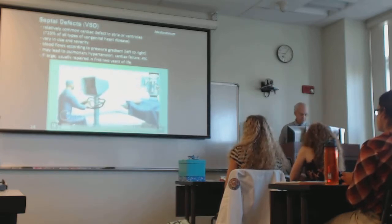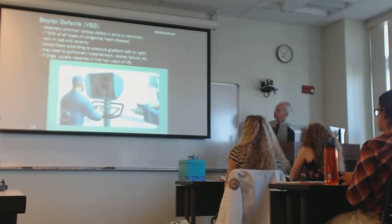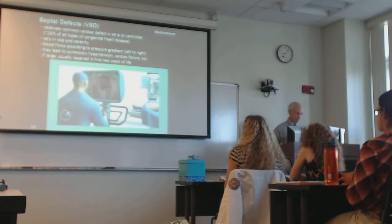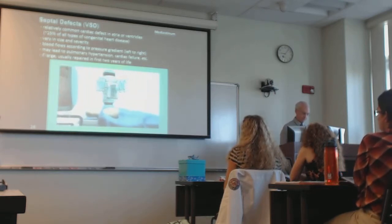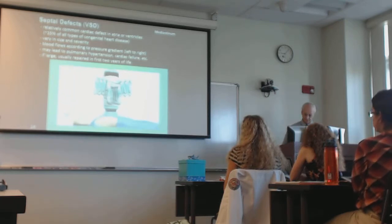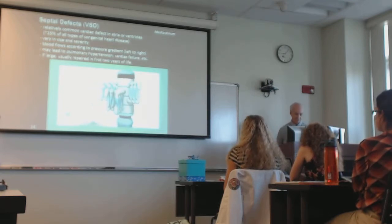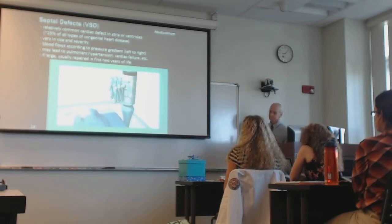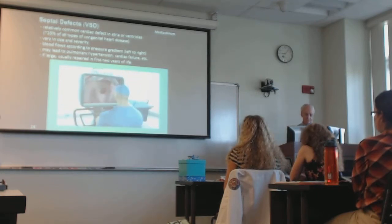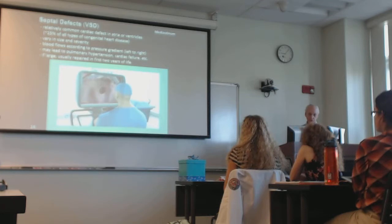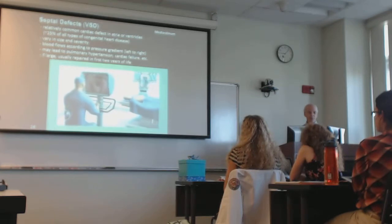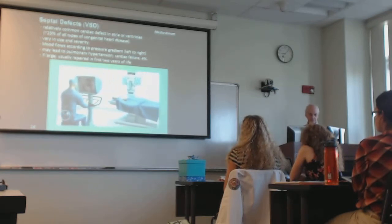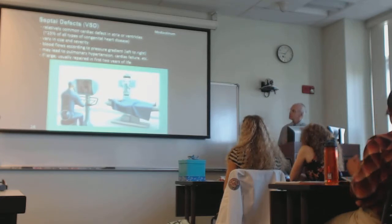The robotic atrial septal defect repair involves repairing a hole in the wall separating the left and right chambers of the heart, called the atria. The robot enables the surgeon to perform the operation through much smaller incisions. The robot has four arms — three hold instruments and one holds a camera — providing a magnified three-dimensional view inside the heart. The surgeon sits at a console, controlling the robot's arms and camera using foot pedals and hand controllers, enabling very complex and delicate surgical maneuvers through smaller incisions than traditional surgery.